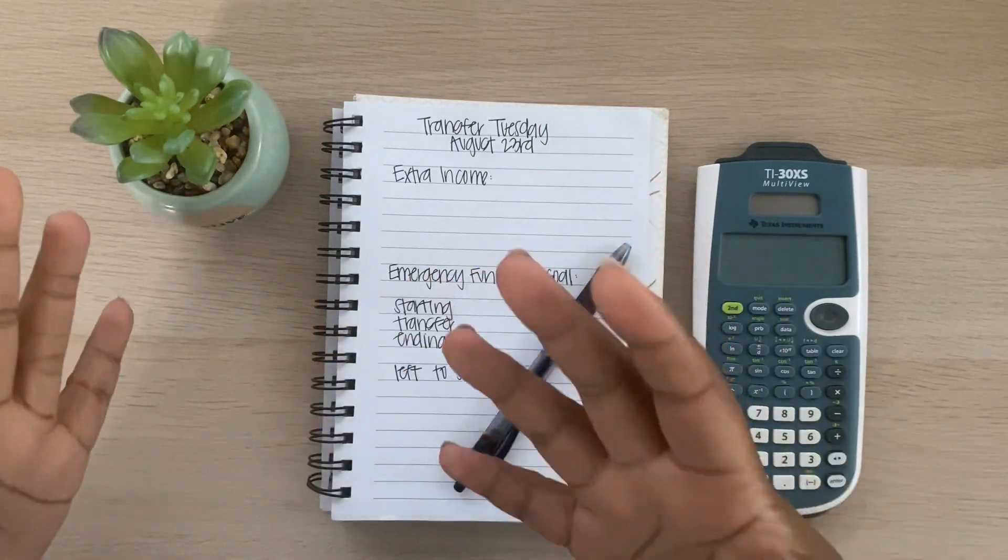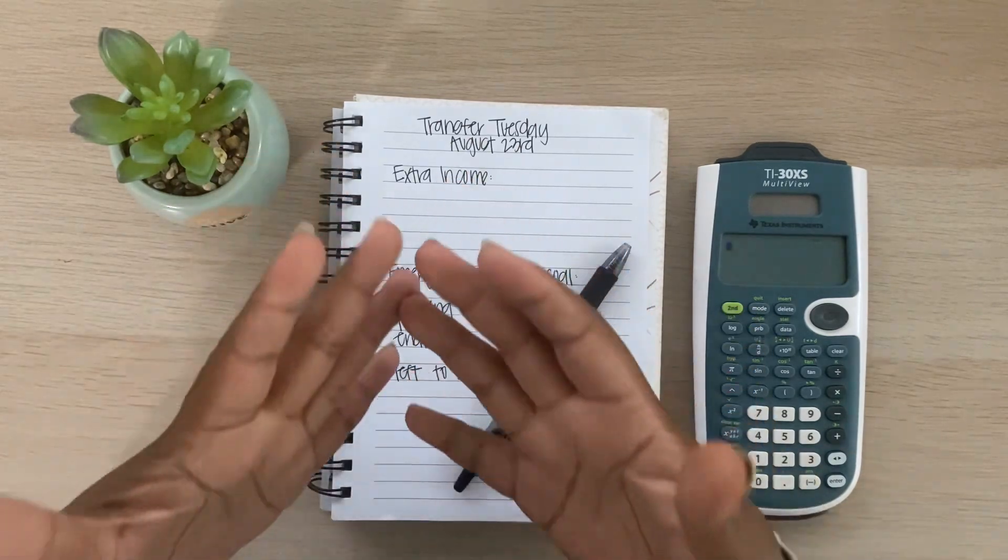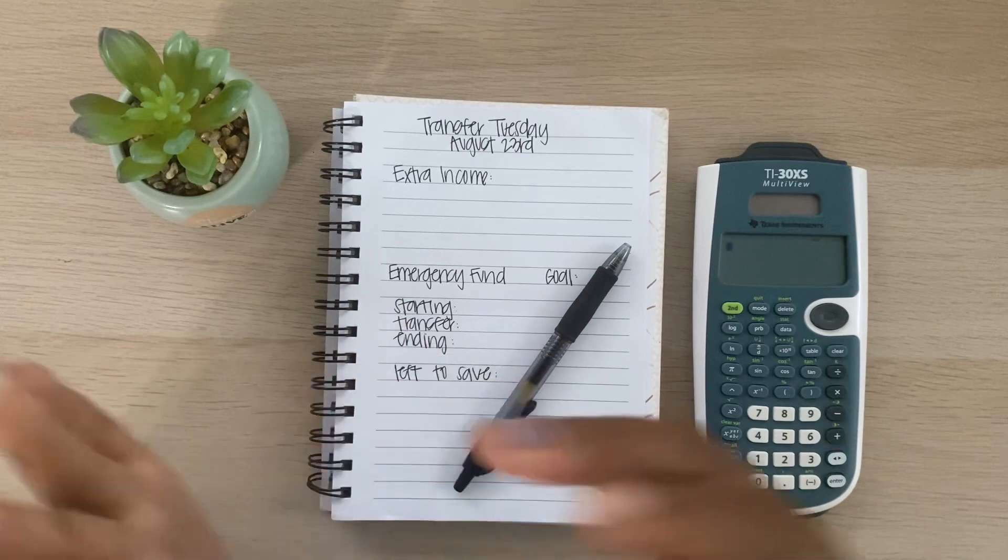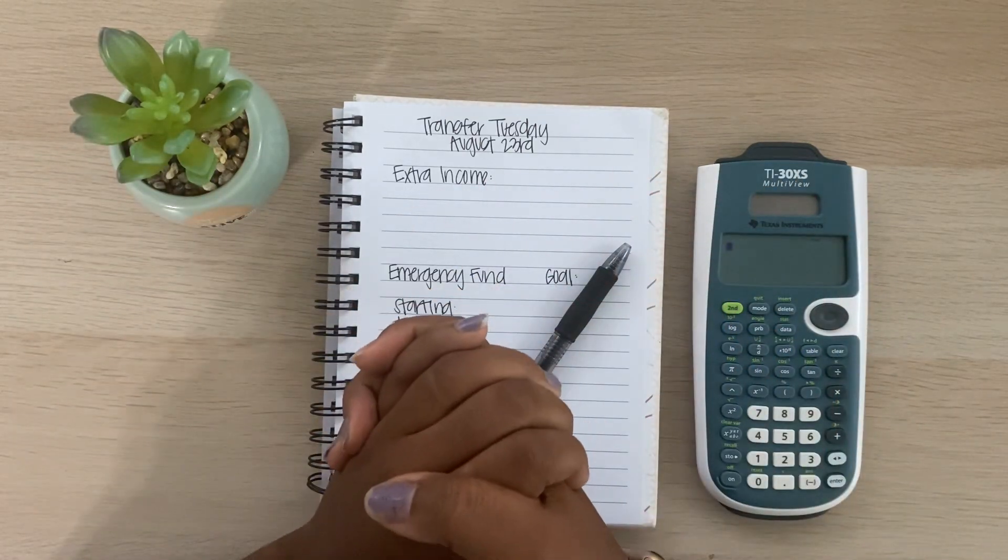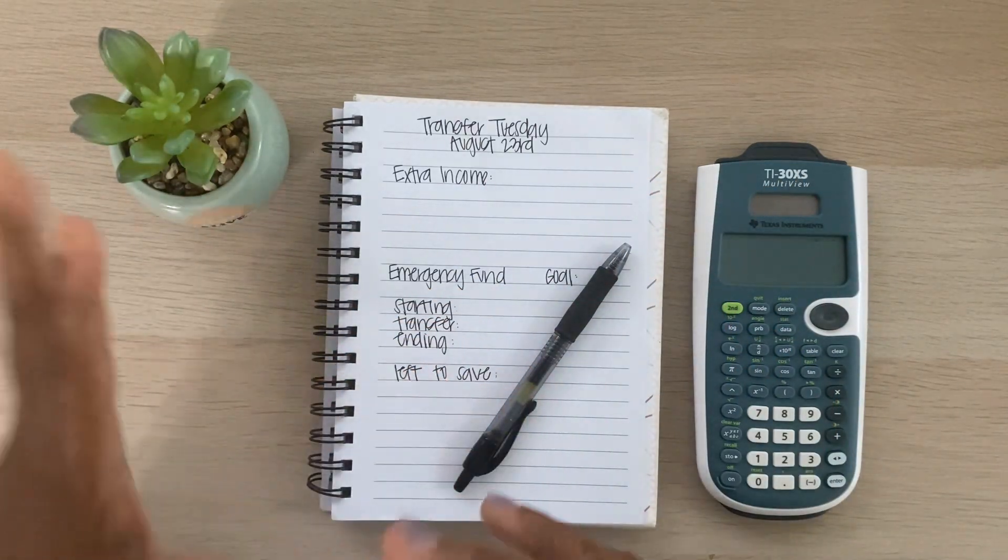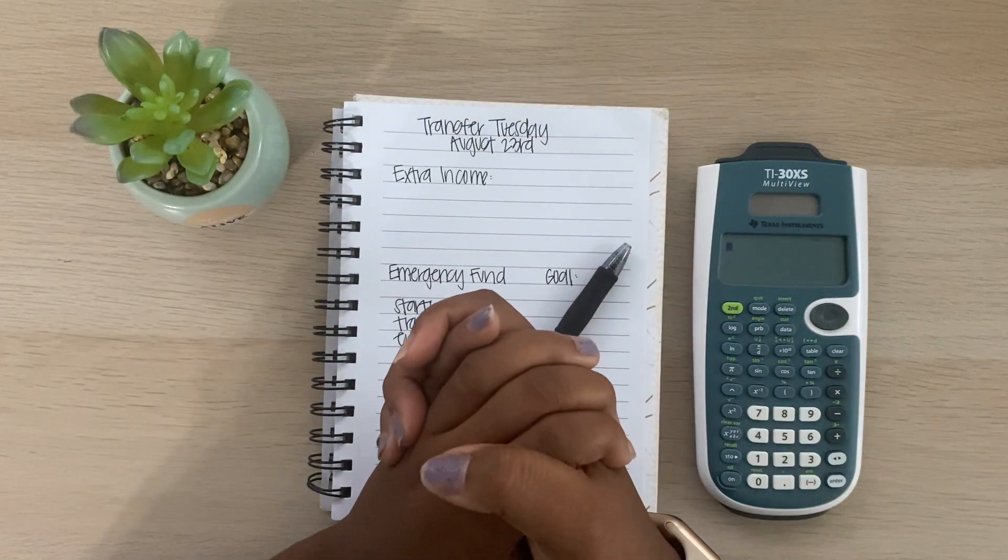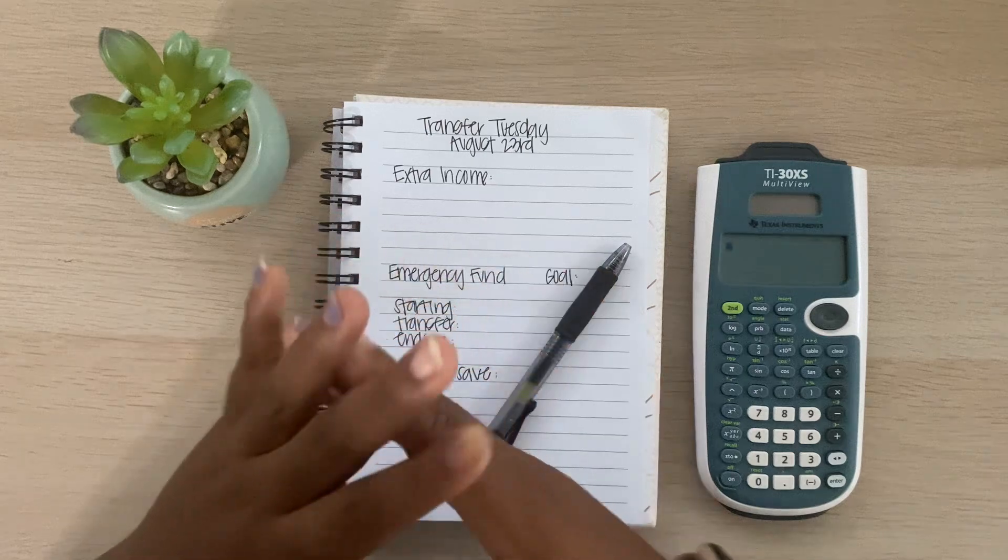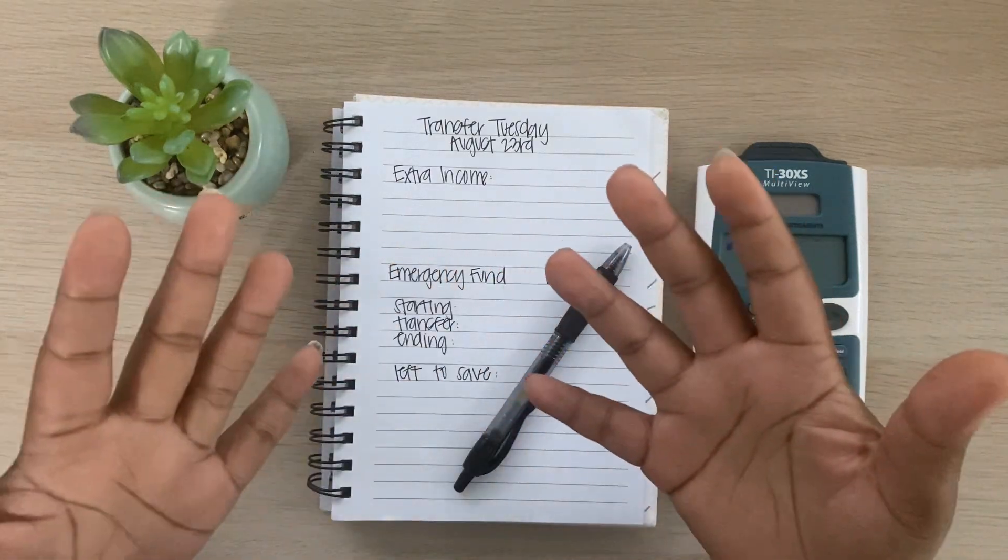But as we can see, today's video is going to be my Transfer Tuesday and I apologize about the lighting because today I don't have my lamp. I actually have my window bringing in some natural light, but it is kind of cloudy here in Texas because it's been raining. So it's not as bright as it usually is.